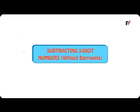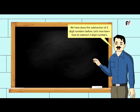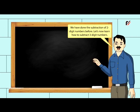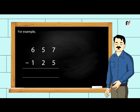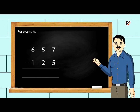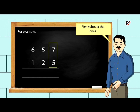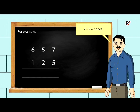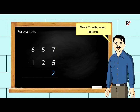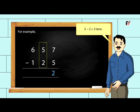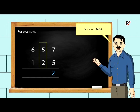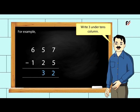Subtracting three-digit numbers without borrowing. You have done the subtraction of two-digit numbers before. Let us now learn how to subtract three-digit numbers. For example, to subtract 125 from 657, first subtract the ones: seven minus five equals two ones. Write two under the ones column. Next, subtract the tens: five minus two equals three tens. Write three under the tens column.